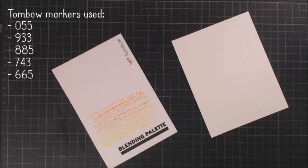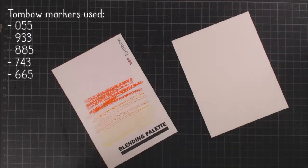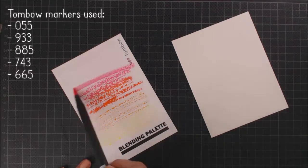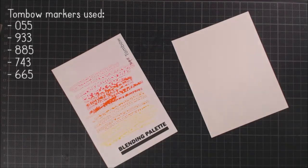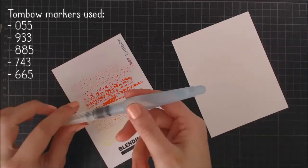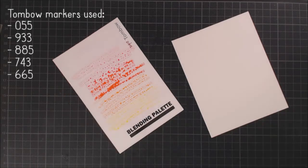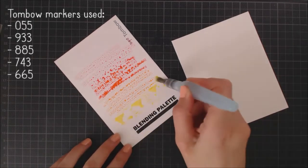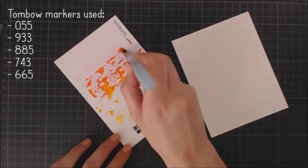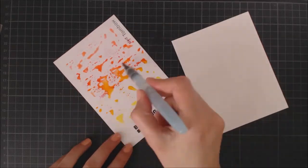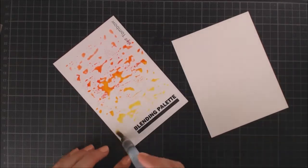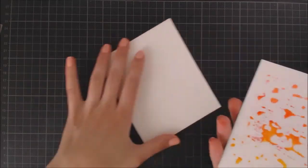I'm taking my markers and scribbling them onto the Tombow blending palette. If you don't have it, you can totally use a piece of acetate as well. Next, I take a watercolor brush to mix the colors together and add some water. And then I'm going to flip it over and smoosh it down onto my watercolor paper.